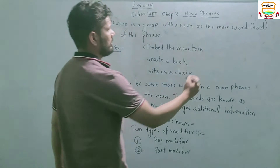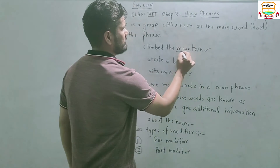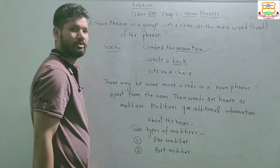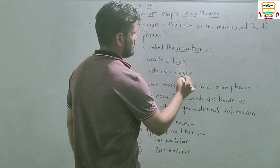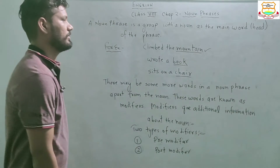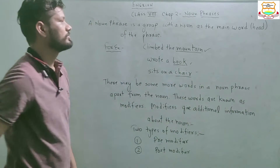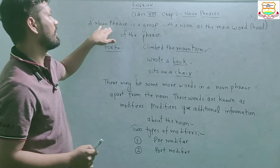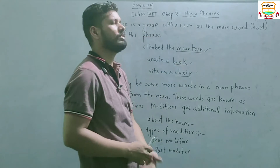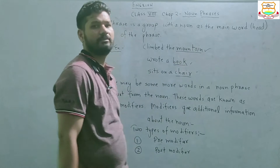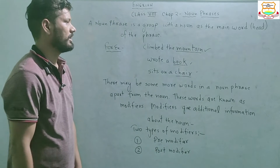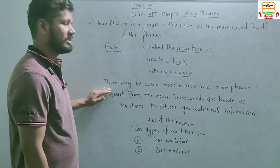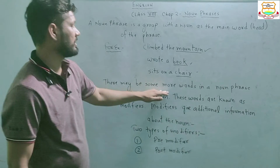For example, 'climb the mountain', 'wrote a book', or 'sits on a chair'. So these all are noun phrases. A noun phrase is a group with a noun as the main word or head of the phrase.